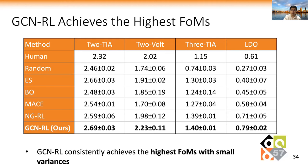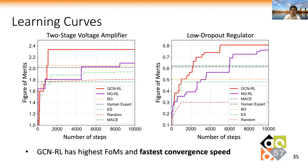The experimental results show that GCNRL consistently achieves the highest figure-of-merit values with small variance. Here are the learning curves on the two-stage voltage amplifier and LDO regulator. GCNRL is shown in the red curves. We can see that besides high figure-of-merit value, GCNRL also has the fastest converging speed.